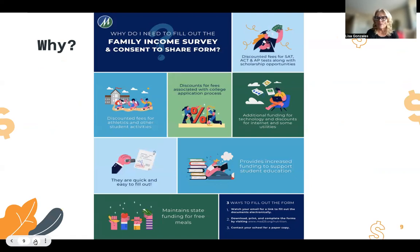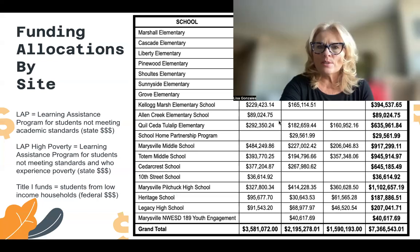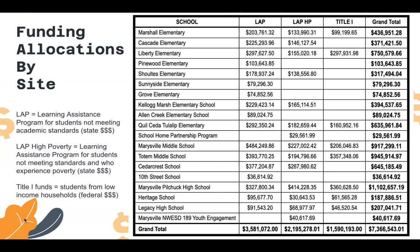Here are some examples. Here is a slide that you might want to press stop on and take a look at the money that comes in. LAP is Learning Assistance Programs — it's for students that are not meeting academic standards. It's state money. The next column over is LAP HP: Learning Assistance Program High Poverty.